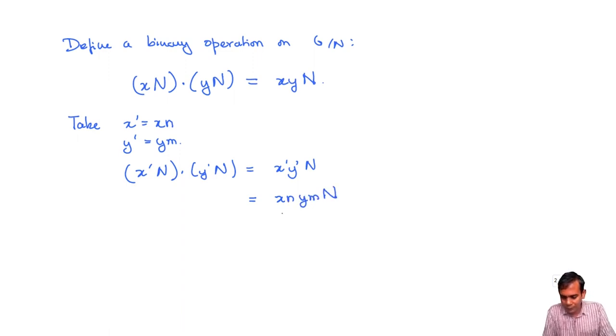I can write this as X, Y, Y inverse N, Y, M, N. I have just added a Y times Y inverse after the X here and that's the identity. So it doesn't really change this expression. But notice that this Y inverse NY belongs to N. This M also belongs to N and this is N itself. So this whole thing is just X, Y, N. Independent of the representatives we choose for the coset, we can define a binary operation on G mod N.